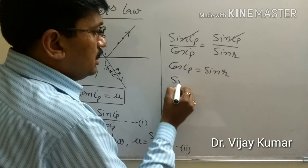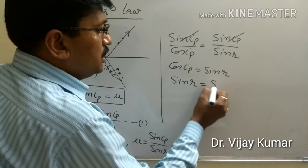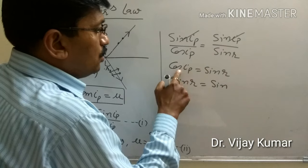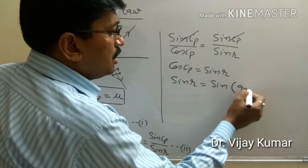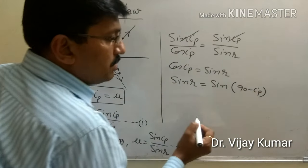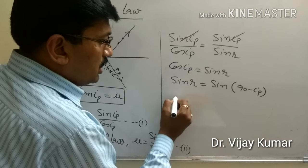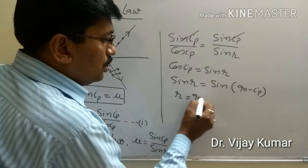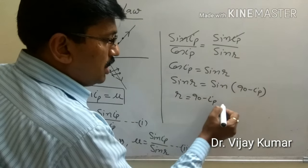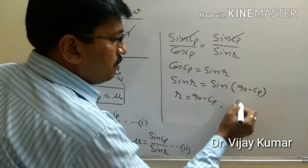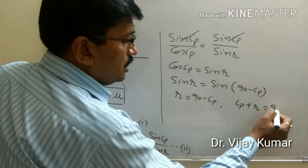And if we equate, r should be equal to 90 minus ip, and ip plus r equal to 90 degrees.